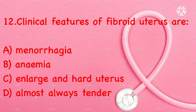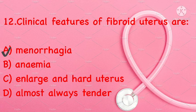Clinical features of fibroid uterus are: menorrhagia, anemia, enlarged and hard uterus, or almost always tender. Correct answer is A: menorrhagia.